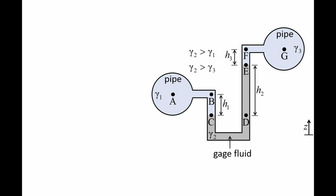Let's use the shortcut method to find the pressure difference between the pipe on the left and the pipe on the right. We start at point G, where the pressure is PG. We move horizontally to point F with no change in pressure. As we descend to point E, the pressure increases by gamma 3 H3. As we further descend to point D, the pressure increases by gamma 2 H2. Now we jump across to point C with no change in pressure — this jump is allowed because both points C and D are in contact with the gauge fluid. As we move upward to point B, the pressure decreases by gamma 1 H1. Finally, we move horizontally from point B to point A with no change in pressure. We've arrived at our destination and set the left side of the equation equal to the pressure at point A.